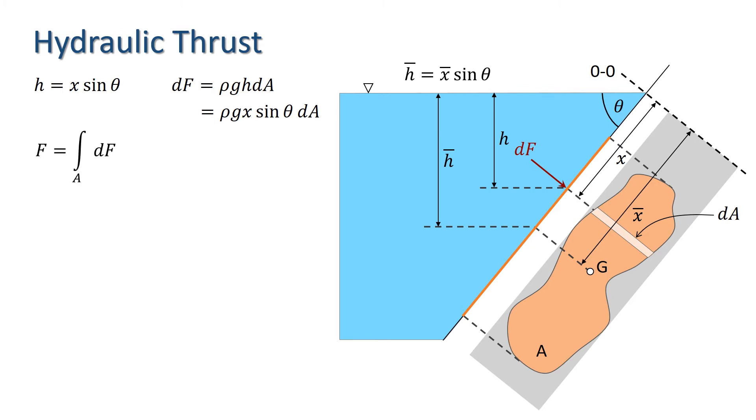We need to integrate over the area A to find the magnitude of the thrust. Noting that rho G and sine theta are all constants, we have rho G sine theta times the integral over A of X dA. This can be written in terms of X bar, the centre of gravity of A, since X bar times A equals the integral of X dA by definition.